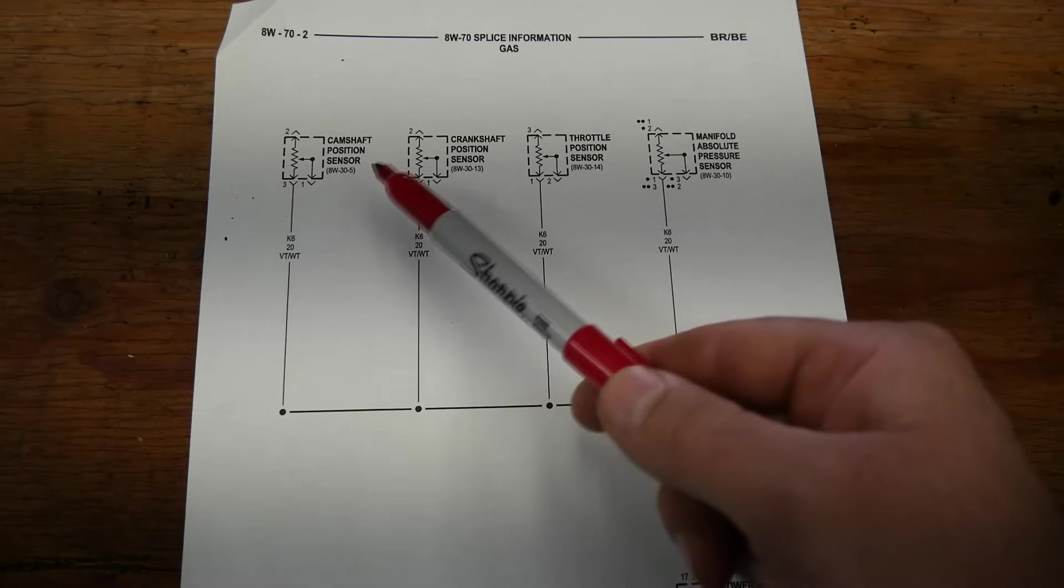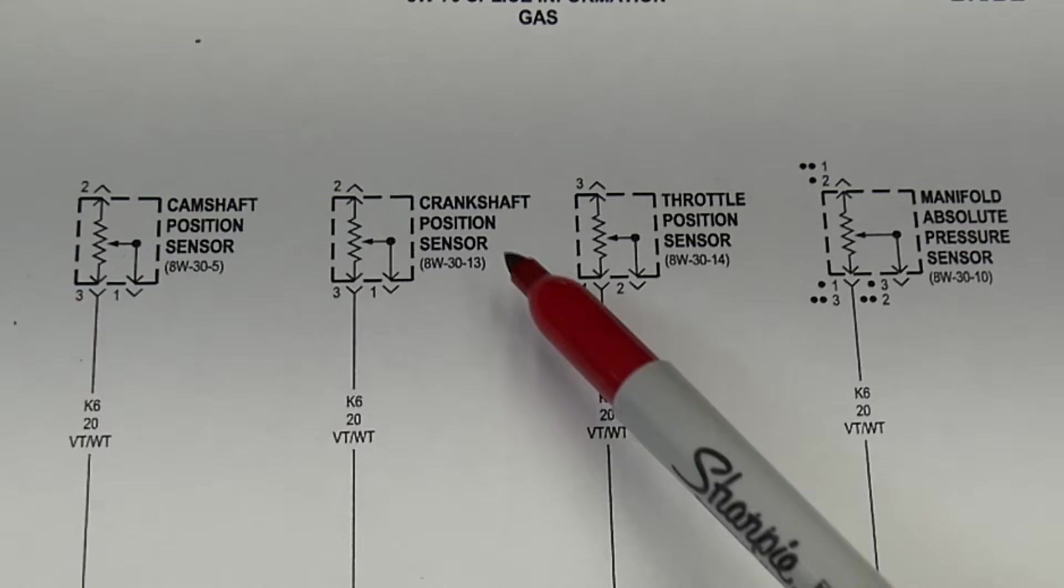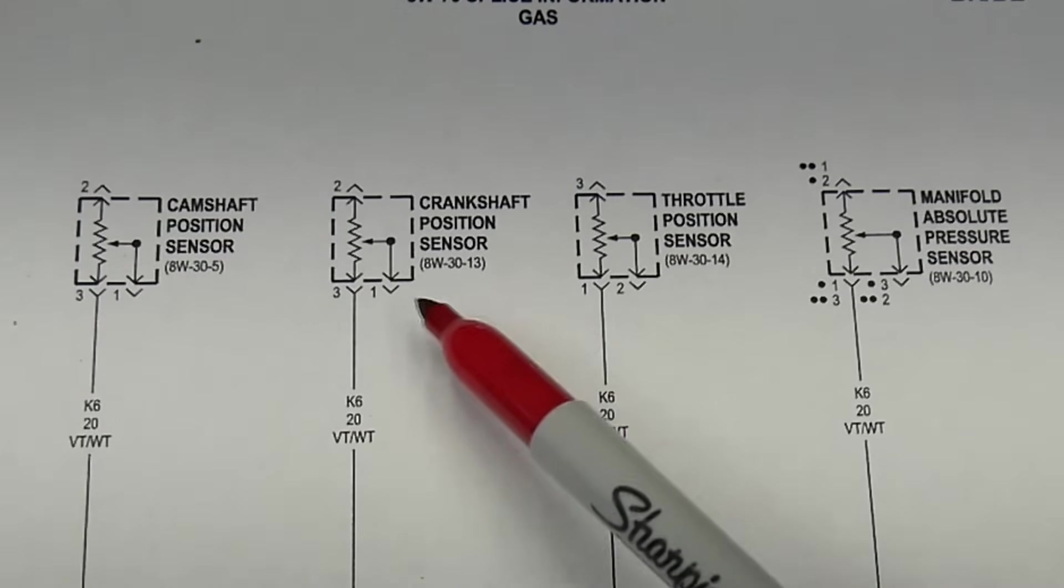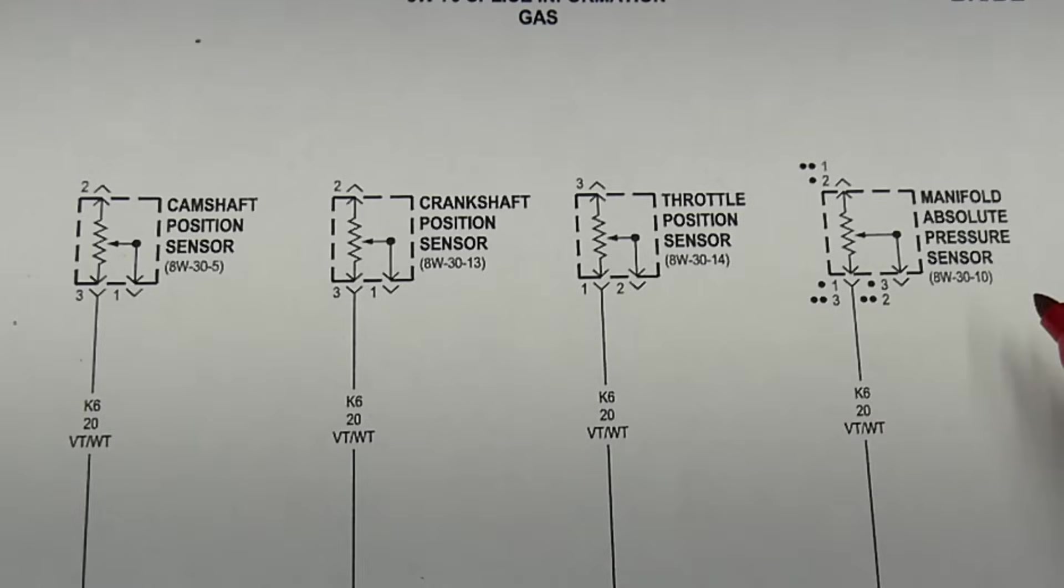So this is the power supply to the camshaft position sensor, crankshaft position sensor that we saw earlier, throttle position sensor, and the manifold absolute pressure sensor.